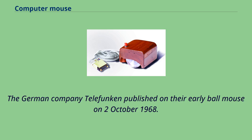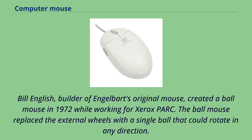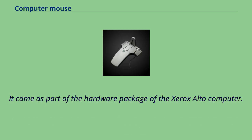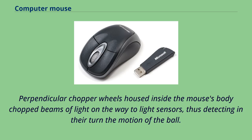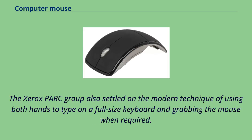The German company Telefunken published their early ball mouse on October 2, 1968, sold as optional equipment for their computer systems. Bill English, builder of Engelbart's original mouse, created a ball mouse in 1972 while working for Xerox PARC. The ball mouse replaced the external wheels with a single ball that could rotate in any direction, coming as part of the hardware package of the Xerox Alto computer. Perpendicular chopper wheels inside the mouse's body chopped beams of light on the way to light sensors, detecting the motion of the ball. This variant became the predominant form used with personal computers throughout the 1980s and 1990s.